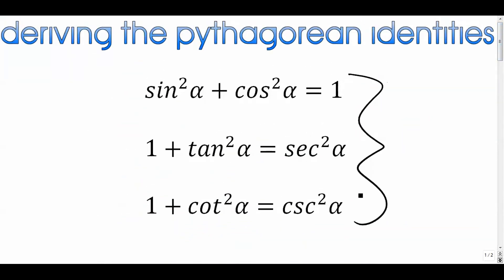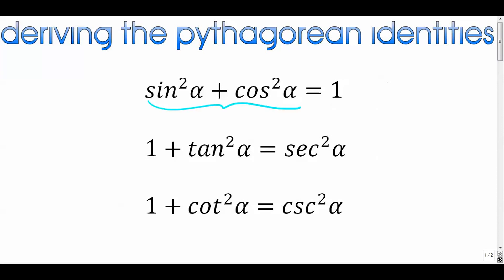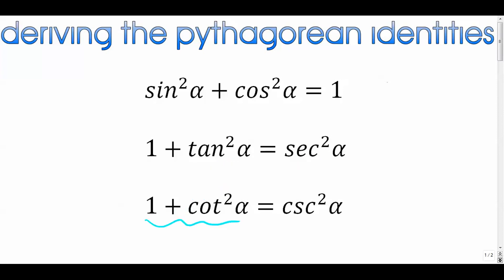These three identities are going to be really important as we move into verifications. Anytime we see sin²x + cos²x we can replace it with 1; anytime we see sec²x we can replace it with tan²x + 1 or vice versa; anytime we see 1 + cot²α we can replace it with csc²α or vice versa. They're very powerful and we'll use them throughout the next three videos. Thanks for watching.